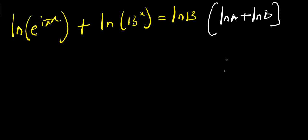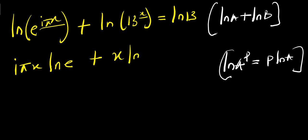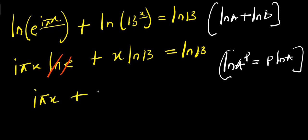Remember also, if you have natural log of a to the power b, this equals b times natural log a. So this comes in front: we have i times pi x times natural log e, plus x times natural log 13, equals natural log 13. Natural log of e equals 1, so we have i times pi x plus x times natural log 13, equals natural log 13.